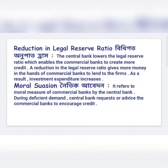Moral suasion refers to measures taken by the central bank to influence commercial banks during deficient demand. The central bank can morally advise or request commercial banks to encourage their credit. During deficient demand, the central bank will advise and request commercial banks to increase their credit.